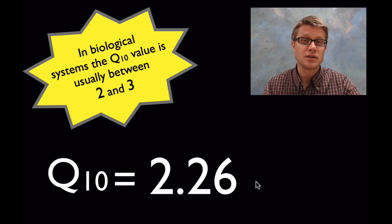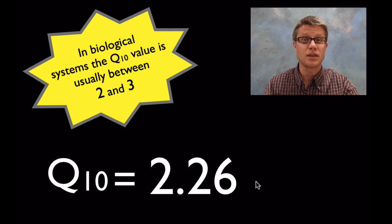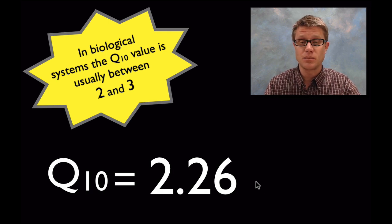Now one thing I found interesting is that Q10 values in biological systems are usually going to be somewhere between 2 and 3. And it's nice to know what your answer is going to be.